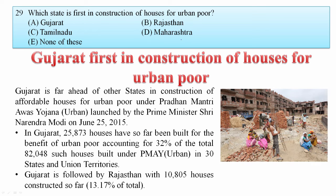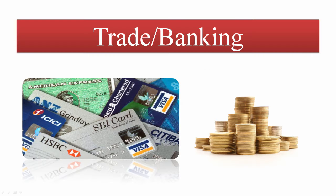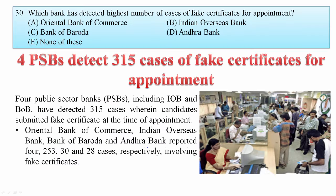Which state is first in construction of houses for urban poor? Gujarat is far ahead of other states in construction of affordable houses for urban poor under Pradhan Mantri Awas Yojana, making nearly 25,000 houses so far, followed by Rajasthan. Your answer is Gujarat.